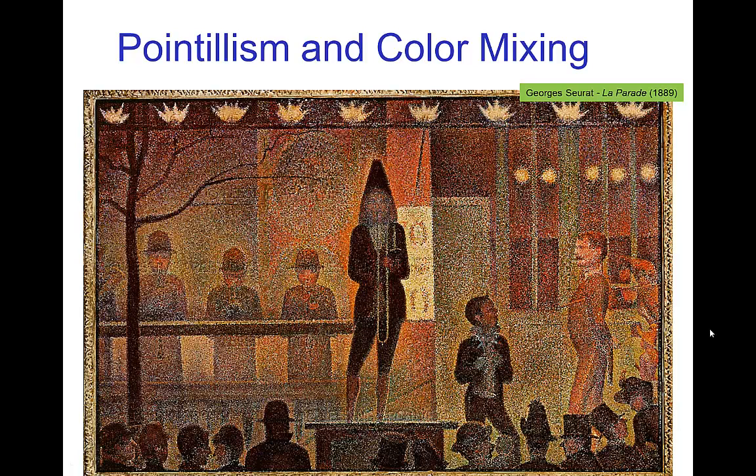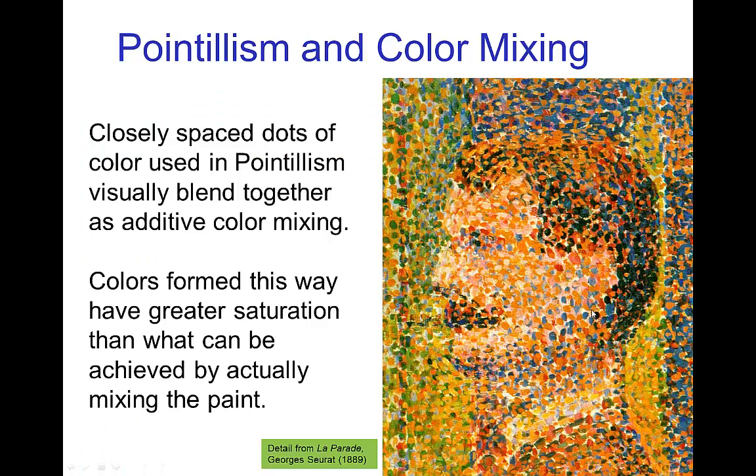Now, it is possible to use additive color with paint if you paint in the style of pointillism. So, here we have a classic example of that from this painting by Georges Seurat. And when you look at a close-up of this painting, you see that instead of mixing pigments together, he actually used tiny dots and somewhat similar to an RGB color display. When you see the dots very close together, they blend together, and you perceive the additive color. And one advantage of this is that you have much greater saturation than you get when you actually mix the paints.